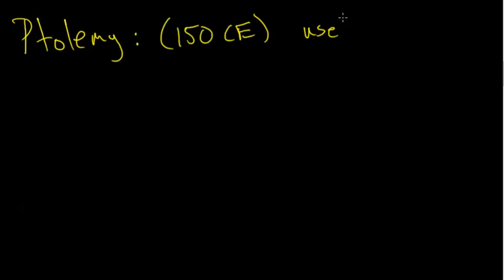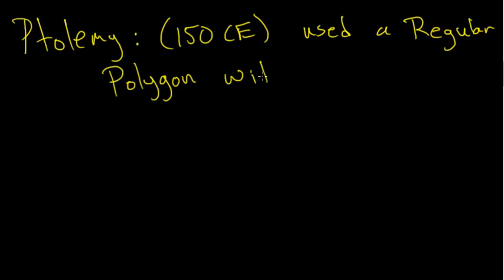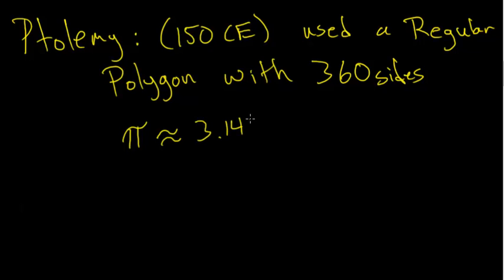Ptolemy, around the year 150, used a regular polygon with 360 sides to find that pi is approximately 3.1416, which you can notice is correct to four places of accuracy.